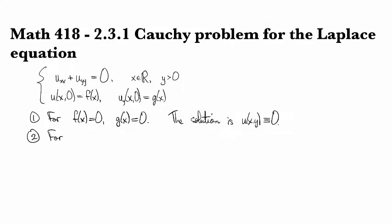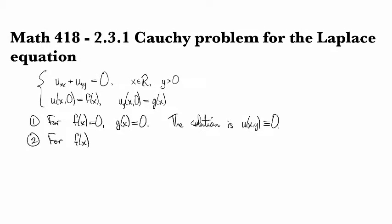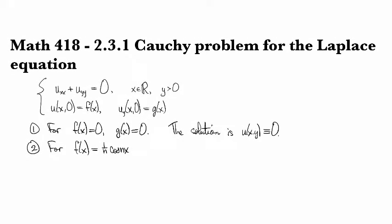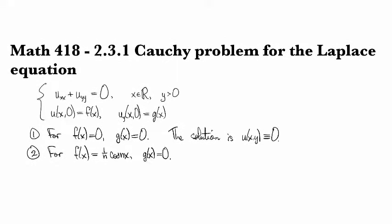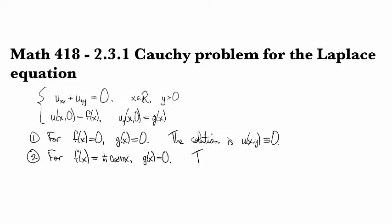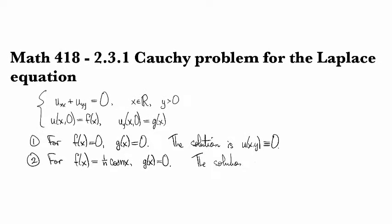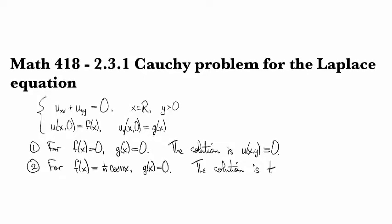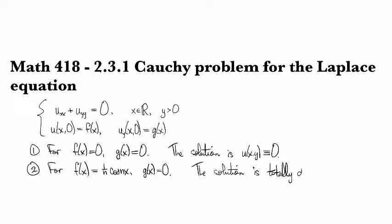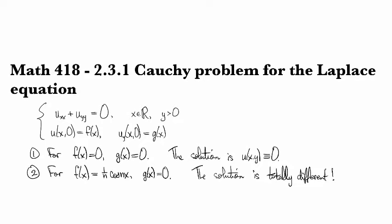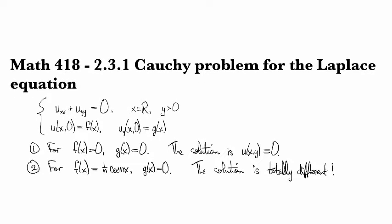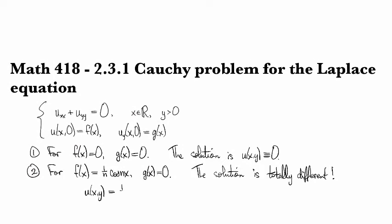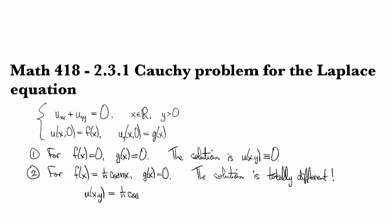On the other hand, let's consider f(x) to be 1 over n cosine nx, and we'll still take g to be 0. In this case, the solution is totally different. So explicitly, u(x,y) is given by 1 over n cosine nx,